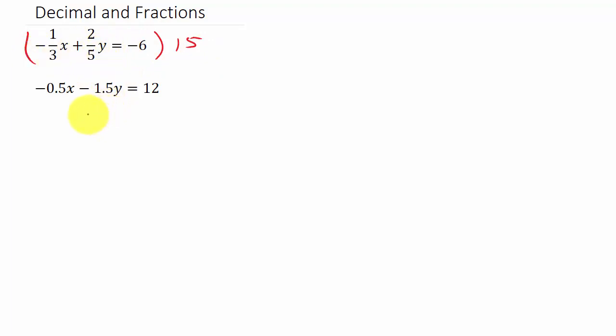That'll get rid of the fractions. Now remember, if you multiply a number by 10, that moves the decimal one place to the right. Multiply by 100, it moves the decimal two places to the right; 1,000 moves it three places to the right, and so on. So we need to move the decimal one place to the right to get rid of it, so to get rid of the decimal we'll multiply each term by 10.